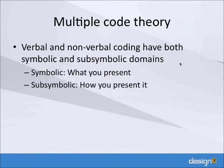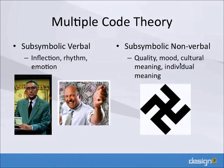An extension of this is the multiple code theory, which holds that you have verbal and nonverbal spaces, but also a symbolic and a sub-symbolic domain in each. The symbolic domain is what you're presenting, and the sub-symbolic domain is how you're presenting and what that means to the individual based on their own experiences and cultural background. In the verbal domain, the sub-symbolic part includes the inflection, rhythm, and emotion of words. You can imagine getting a lesson from Ben Stein versus Jim Cramer — one has a slow monotonous drone, the other a manic delivery — and people will be affected differently.